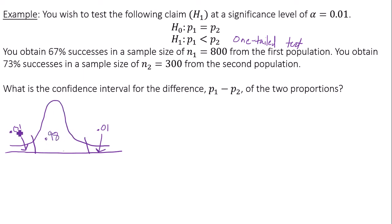It's 1 minus alpha twice. So here's the general rule. For a two-tailed test, your confidence level is always equal to 1 minus α.